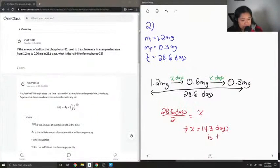So x is equal to 14.3 days, and this is the half-life of phosphorus.